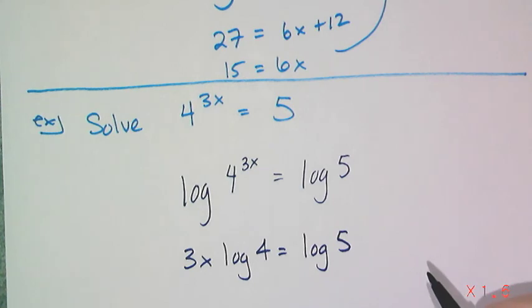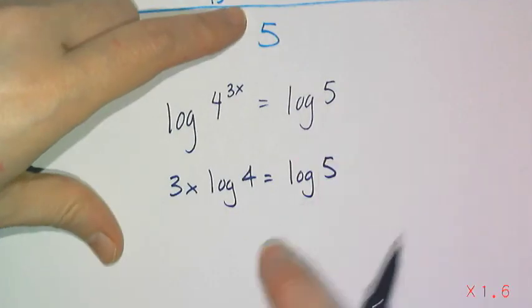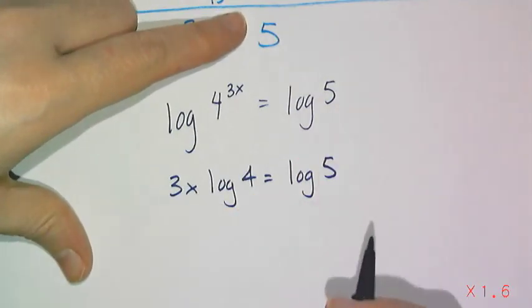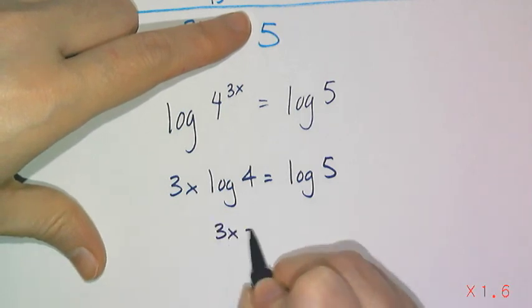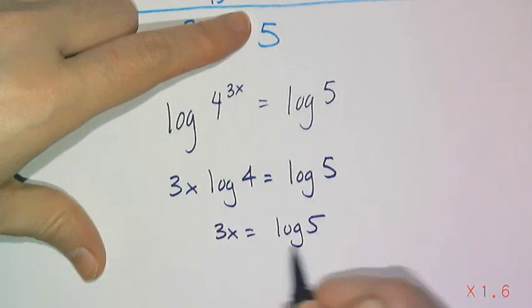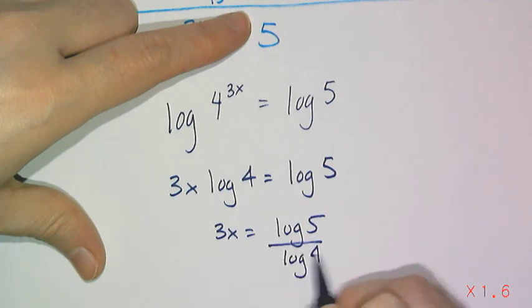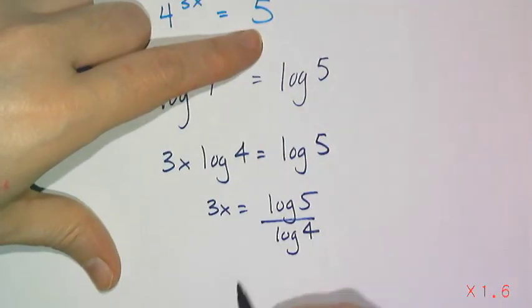And now I treat logarithm like it's a number, because it is. Log 4 is just a number. So I'm going to divide both sides by log 4. So I get 3x equals log 5 over log 4. And then I just have to divide both sides by 3.